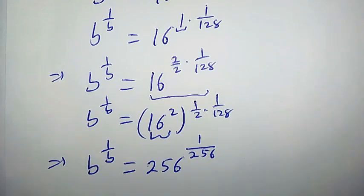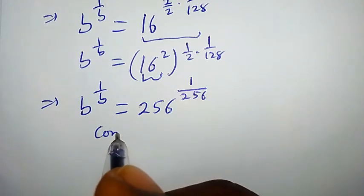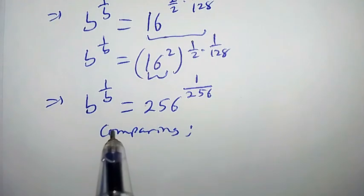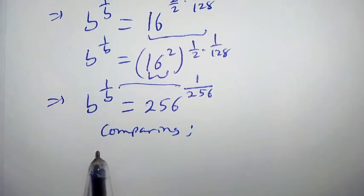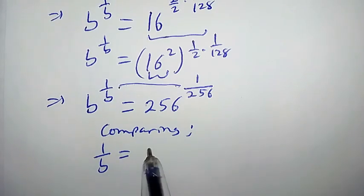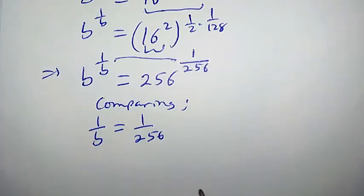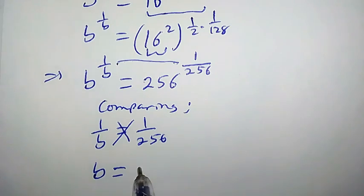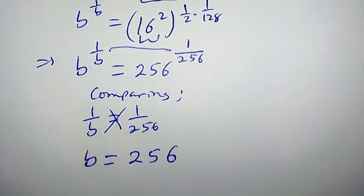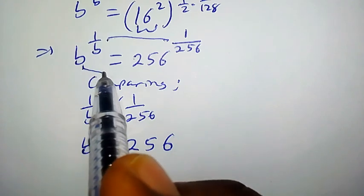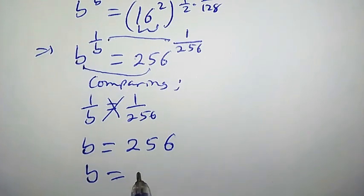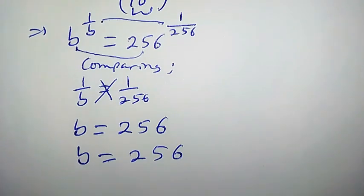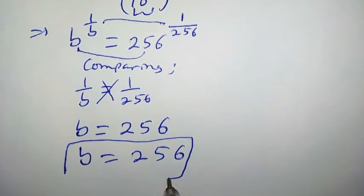Now, let us compare. Comparing: if we try to equate the powers, we are going to have 1 over b equal to 1 over 256. By cross-multiplying, b is equal to 256. Also, let us try to equate the bases — that clearly shows that b is equal to 256. This is the required solution. b is 256.